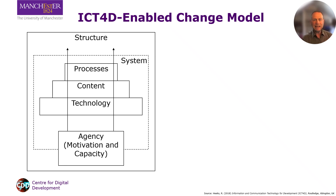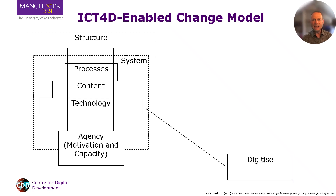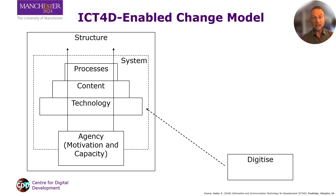Alongside this basic system model, we can add the first of the four stages, which is digitisation, in which you change the technology of one or more of the system's processes — initially changing from physical to digital, without otherwise changing those processes. An ICT4D example would be making a phone call to find the price of crops in the local market, instead of getting in a minibus to physically visit the market.